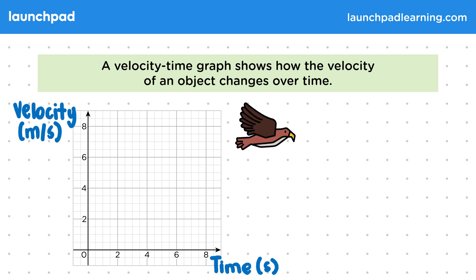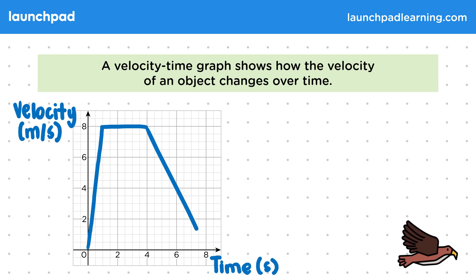Let's look at an example of a bird flying towards the ground, so we can get an understanding of how these graphs work. As the bird starts moving, the velocity quickly rises as it gains speed. It then stays at this speed for a few seconds before slowing down again, and the height of our graph changes depending on the bird's speed.